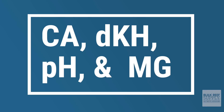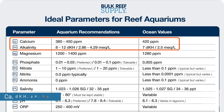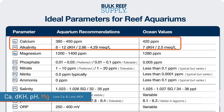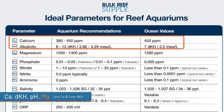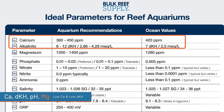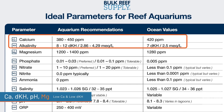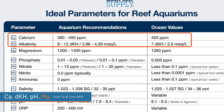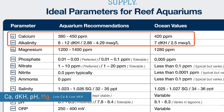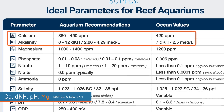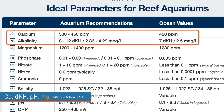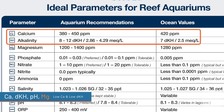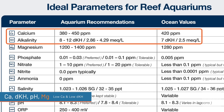We're going to jump right in to our first scenario today. Scenario number one: low calcium and low dKH. Normal calcium ranges are really anywhere between 380 on the low side and 450 on the higher end. Normal alkalinity ranges in an aquarium can range from 7 to 12 dKH. I personally shoot for about 425 calcium and somewhere around 8 to 9 dKH.